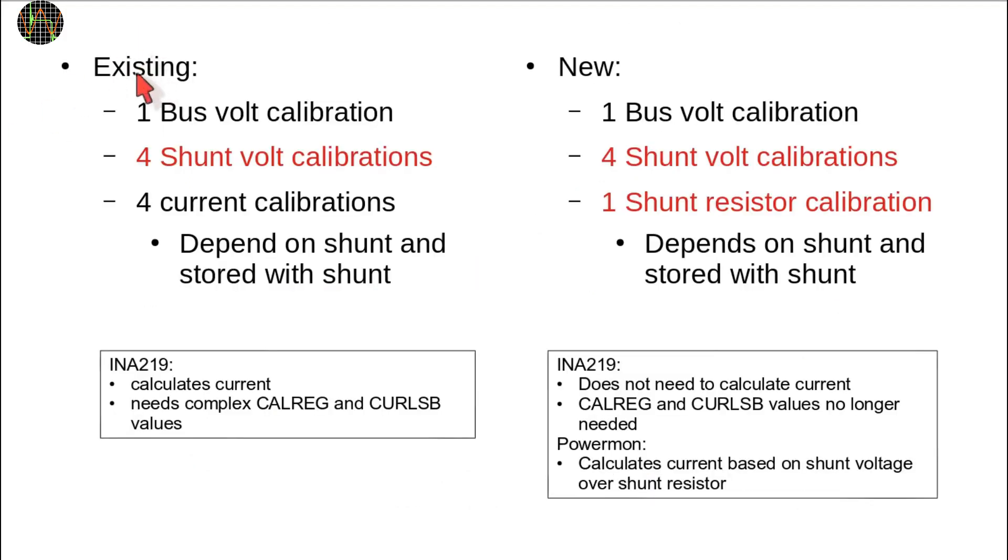On the left is the existing calibration. I have added the shunt voltage calibration because we definitely need it in any case. On the right is the new method which I have now implemented. It is significantly less calibration work and adding a new shunt resistor just adds one calibration step instead of four.